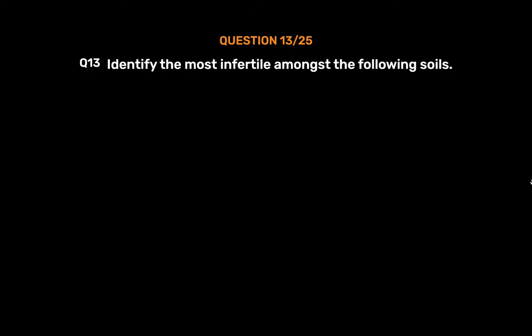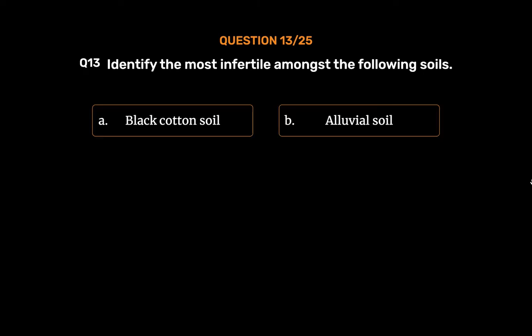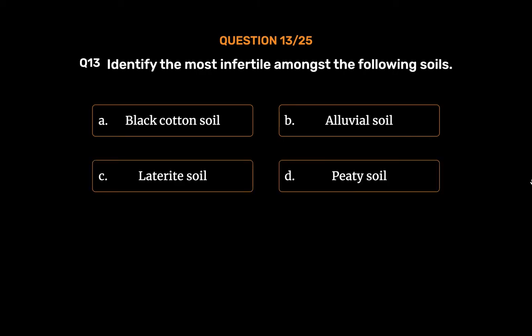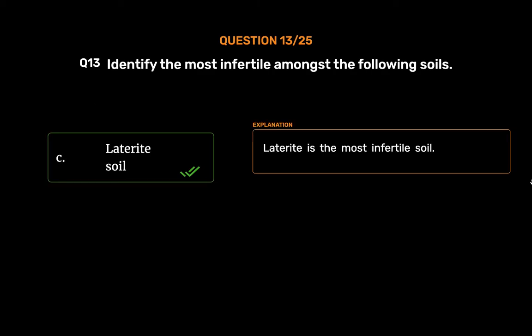Question No. 14: Identify the most infertile amongst the following soils — Option A: Black cotton soil, Option B: Alluvial soil, Option C: Laterite soil, Option D: Peaty soil. The correct answer is Option C, Laterite soil. Laterite is the most infertile soil.